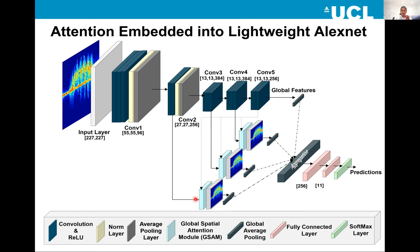The mechanism shown in sky blue is called the Global Spatial Attention Module. I call it this because I'm using global features to refine the local features. On the next slide, I'll discuss what this Global Spatial Attention Module comprises.